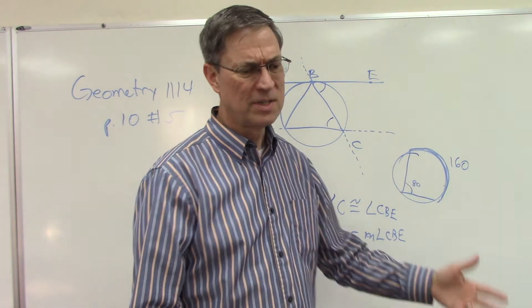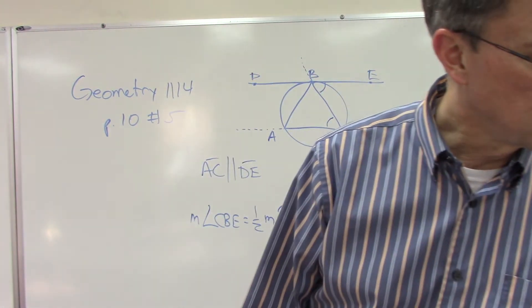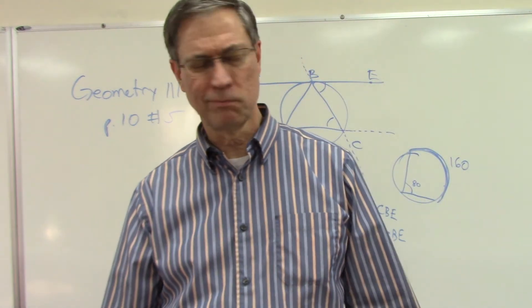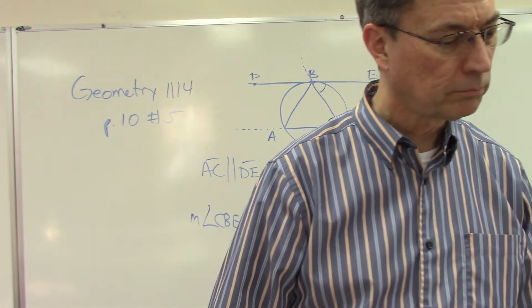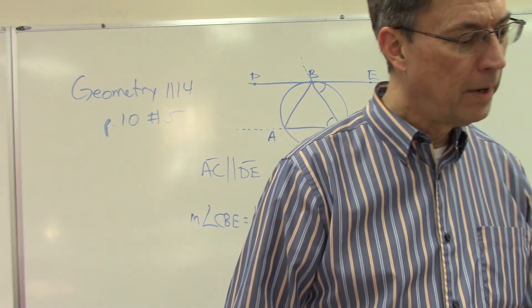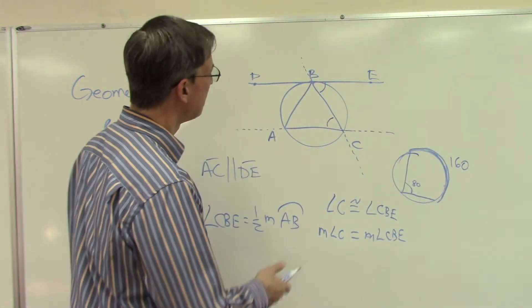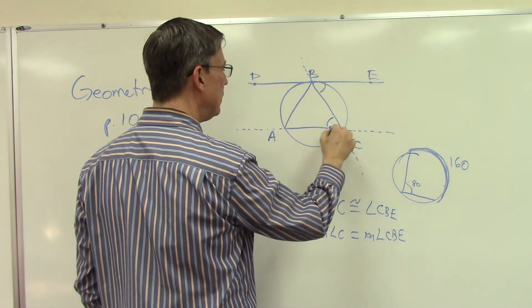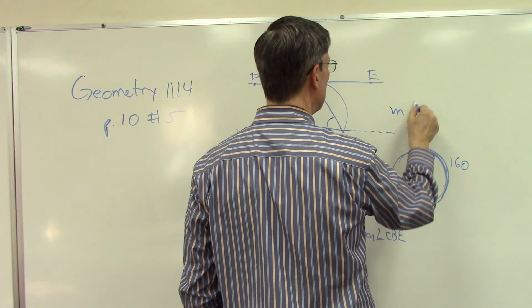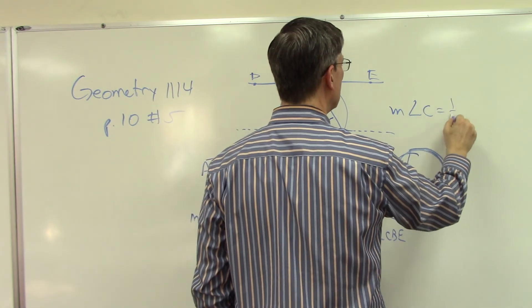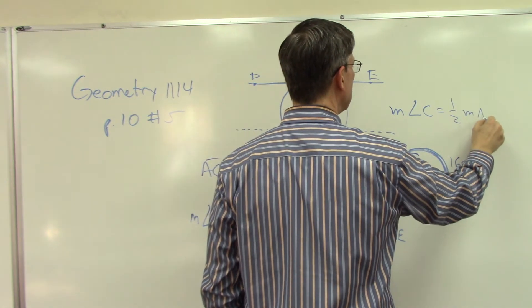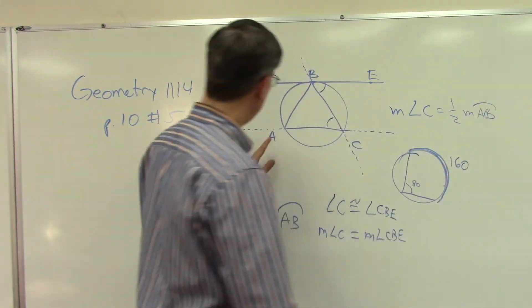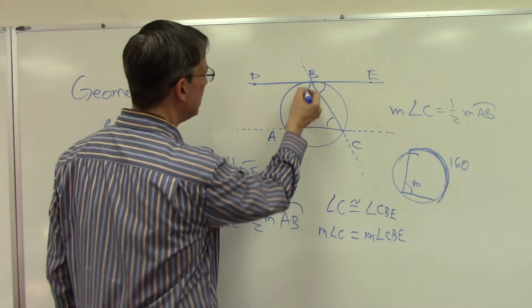And I think that's just, is that just the definition, okay? Yeah, definition of congruent angles. All right. Now, can we say that the measure of angle C here is equal to one-half the measure of arc AB? Okay, so here's the arc. Can you see this?